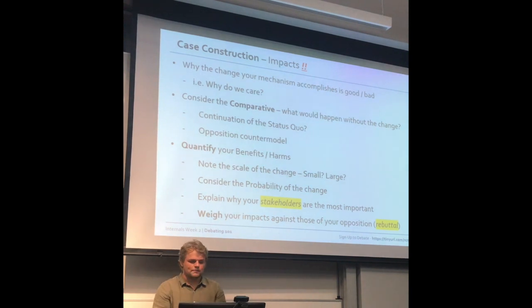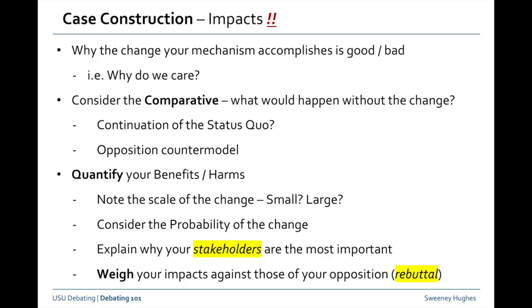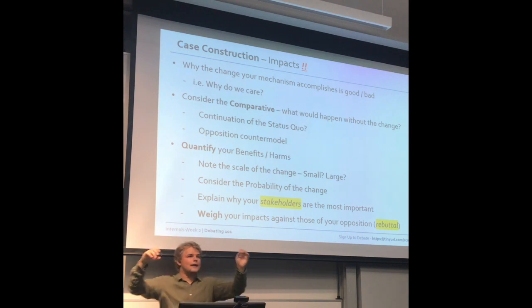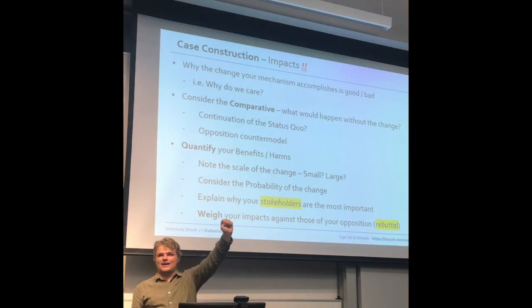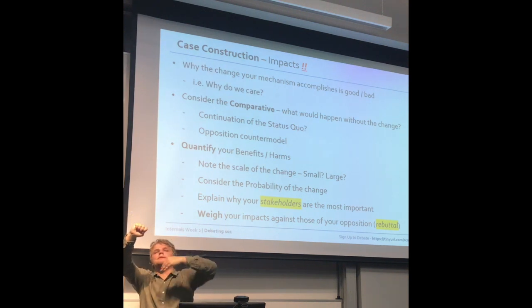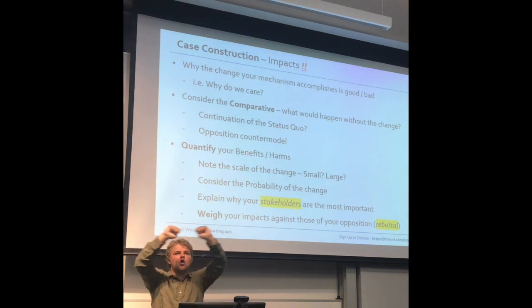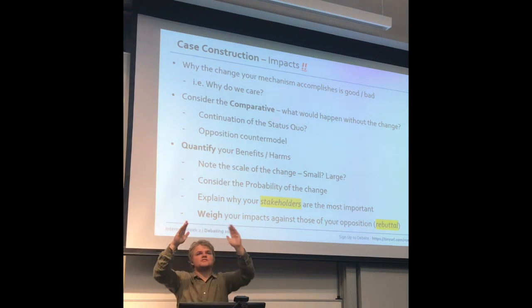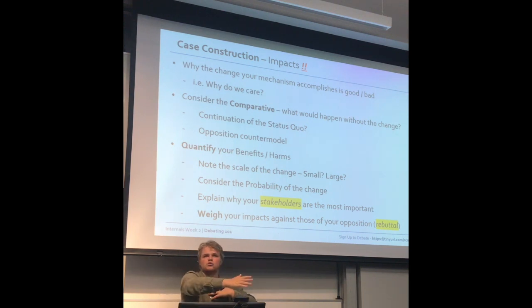Finally, in impacts it's important to weigh your impacts against those of your opposition. Maybe your main benefit in a debate is some great economic transformation that's good for the middle class, and their main benefit could uniquely benefit a certain minority group. That is a hard thing to resolve when adjudicating, but if you do some legwork explaining why this group is far more important than the other — why an adjudicator should care far more about that group — that goes a long way to impacting the harm you get.